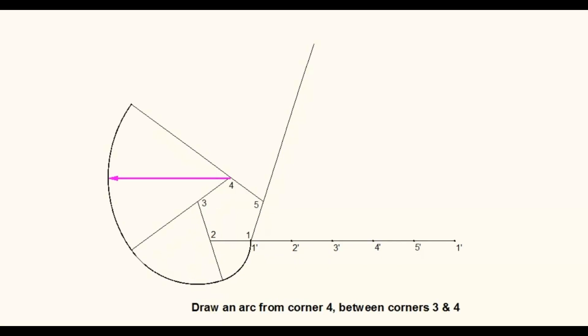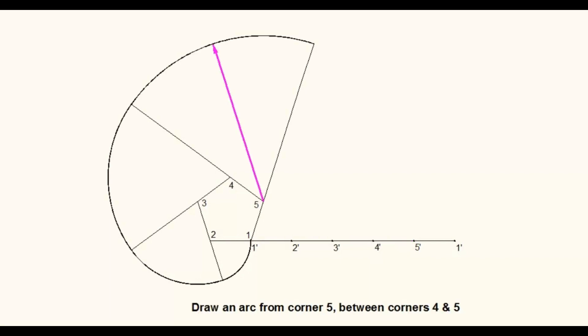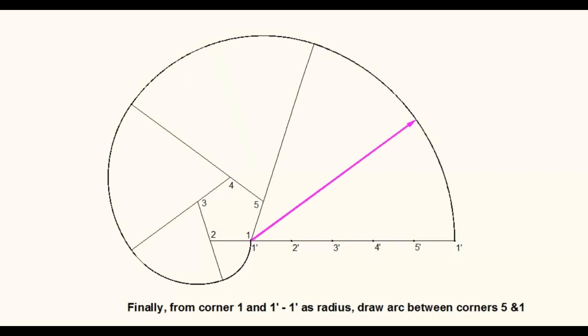Measure the distance of 1-dash to 5-dash on the horizontal line. With corner point 5 as center, draw an arc between edges 4 and 5. Finally, with radius 1-dash to 1-dash, draw an arc between edges 5 and 1. Thus the involute of a pentagon is drawn.